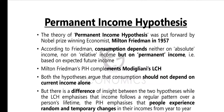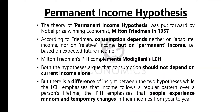The theory of Permanent Income Hypothesis was put forward by Nobel Prize-winning economist Milton Friedman in 1957. According to Friedman, consumption depends neither on absolute income nor on relative income, but on permanent income — that is, based on expected future income.